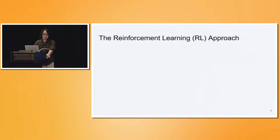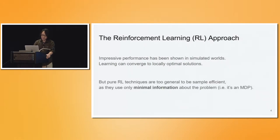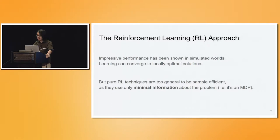How do we solve this problem? We can try the beloved RL approaches we know of — for example, TRPO and PPO. These algorithms have shown very impressive performance on simulated problems and are designed to converge to locally optimal solutions. But if you want to apply them in the real world, there's a fundamental issue: they are designed to be too general, and so they are usually not sample efficient. They typically require thousands or millions of interactions to learn a reasonable policy, which is not feasible on a real robot.